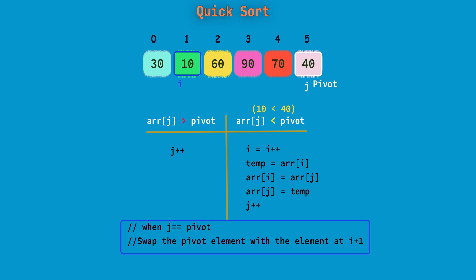When j is equal to pivot, we need to swap the pivot element with the element at i plus 1. So here 40 will move to the second index. This is the important phase. If you see here after the first set of operations or in the first recursive call, the pivot came to the middle and all the elements lesser than pivot came to left and the remaining elements that are greater than the pivot all moved to the right.